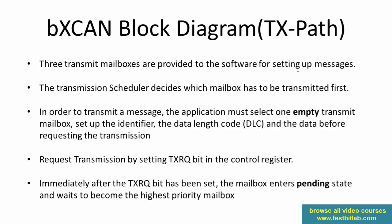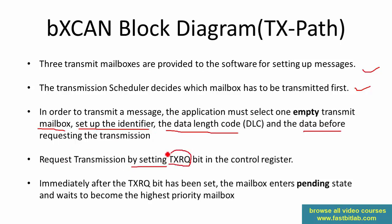Three transmit mailboxes are provided, and the transmission scheduler decides which mailbox has to transmit first. In order to transmit a message, the application must select one empty transmit mailbox, then set up the identifier, the data length code, and the data before requesting the transmission. You have a data structure for that. Then request the transmission by setting the transmission request bit in the CAN control register.